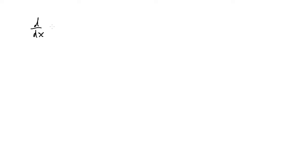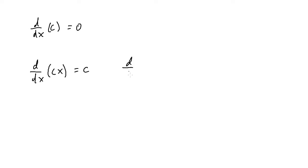Starting with the very first derivative rule: whenever you take the derivative of just a constant value, that derivative is always going to be equal to zero. For the second rule, if you take the derivative of a constant times the variable x, the derivative will just be equal to the constant itself. So the derivative of 2x is just 2, and the derivative of x is 1.